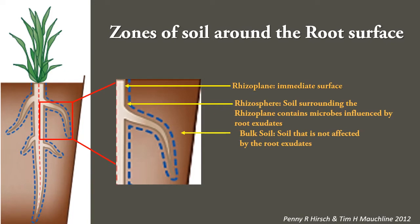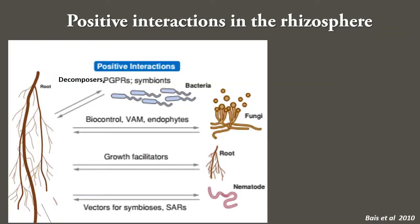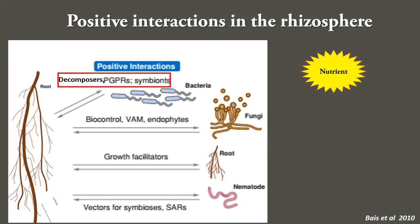There are two types of interaction in the rhizosphere: positive interaction and negative interaction. The positive interaction is beneficial for both plant and microbe. The arrow in this figure represents that the interaction is bidirectional and the exchange of materials takes place between the two organisms. The bacterial community plays the role of decomposers, plant growth promoting rhizobacteria, or symbiotes as in root nodules.